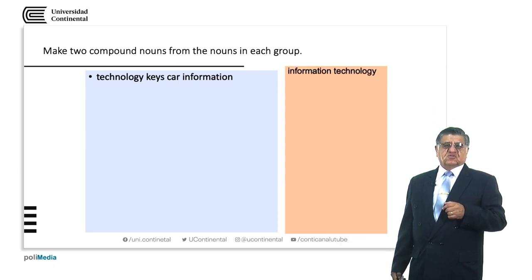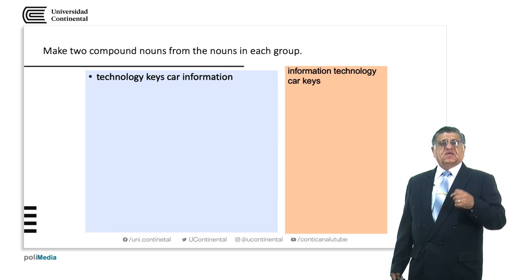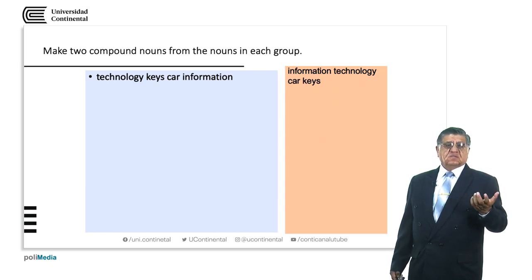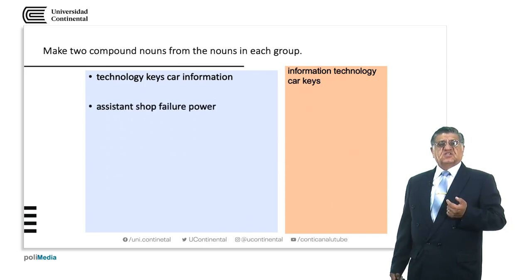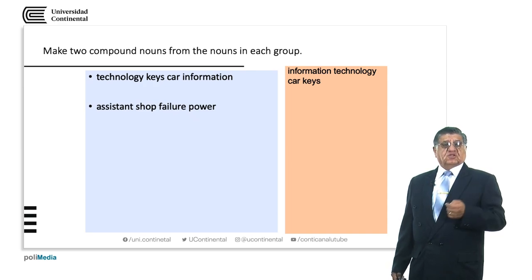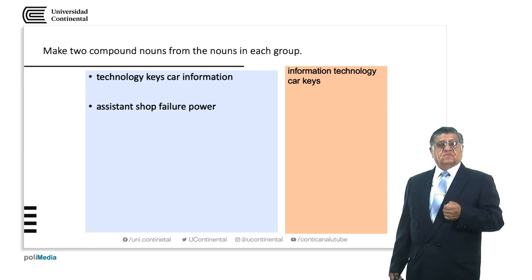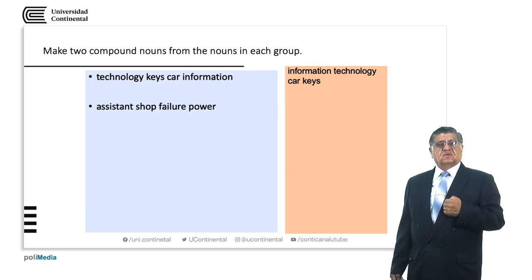Information technology. Car keys. Next group: assistant, shop, failure, power — many possibilities there: 'shop assistant' and 'power failure', for example.